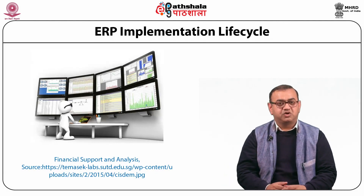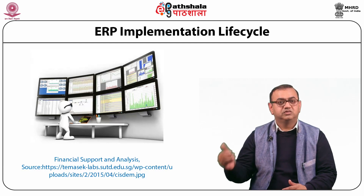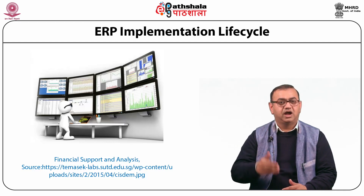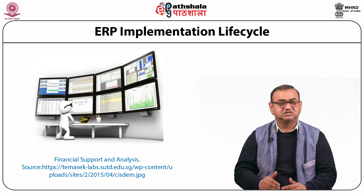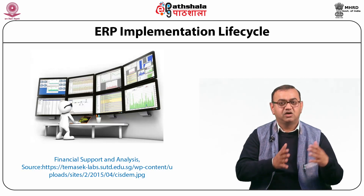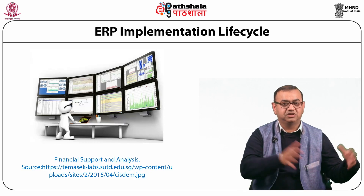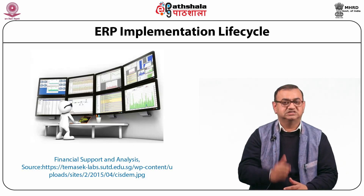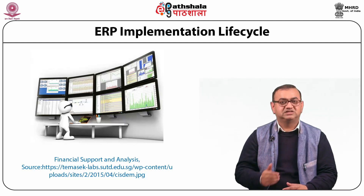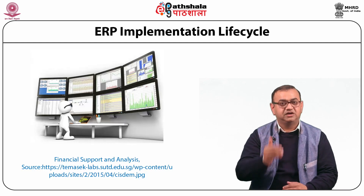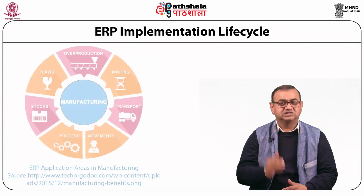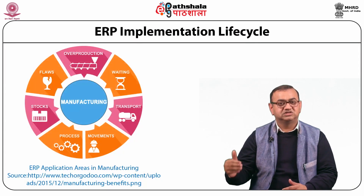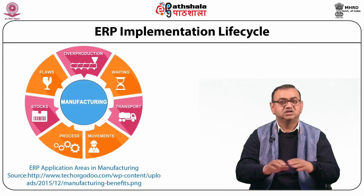ERP integrates customer order information, enabling hand-holding from the time a sales representative receives an order until the article is shipped and finance raises an invoice. Having information in one software system rather than scattered enables companies to track orders easily and coordinate manufacturing, inventory, and shipping among various destinations. ERP systems also standardize and speed up manufacturing processes by providing standard methods of automating steps of the manufacturing process, saving time, increasing productivity, and reducing headcounts.